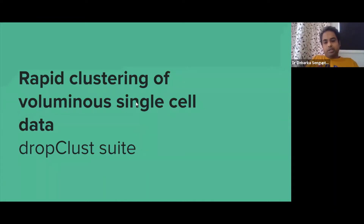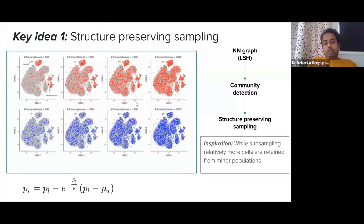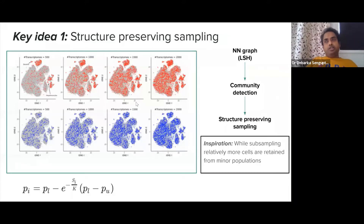We developed a clustering solution because in 2017 the fastest method used to take about 20 minutes for analyzing single cell RNA-seq data of even 20,000 to 40,000 cells. It's not just time — it's also about algorithmic considerations that help find rare cell sub-clusters. We developed an ensemble called Drop+, which is quite popular. You can check out the papers.